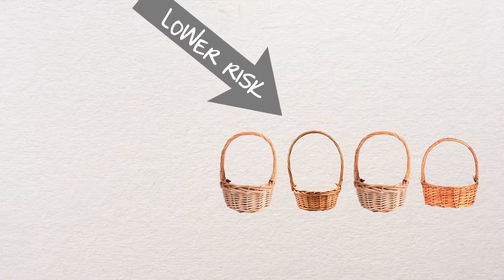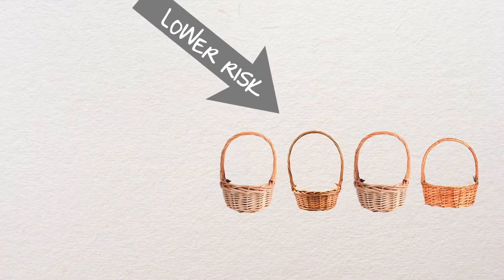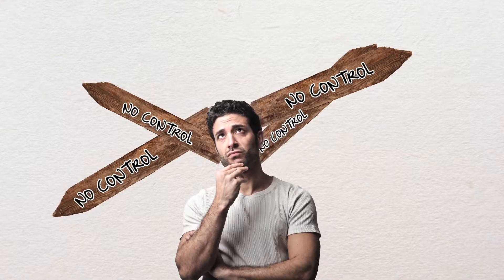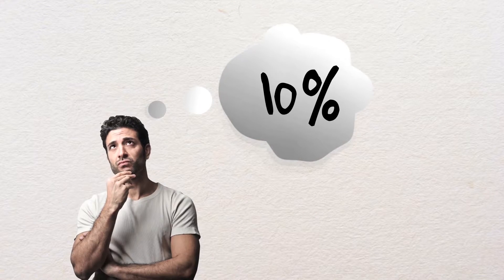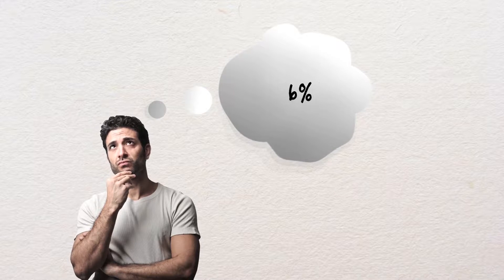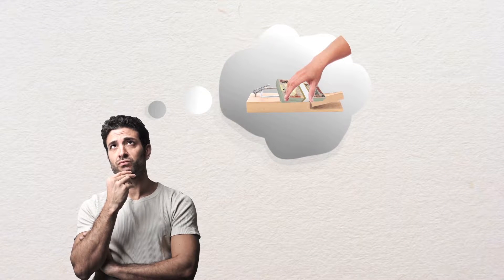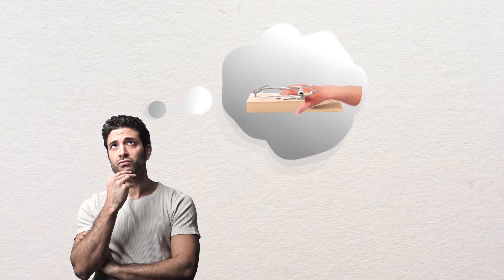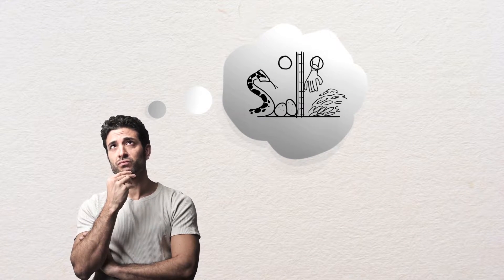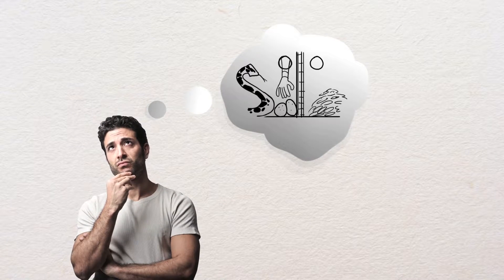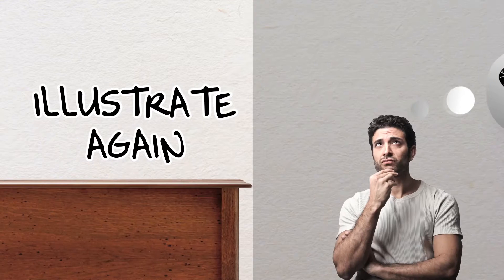Risk is easy to understand — it's the possibility of there being multiple outcomes, often those that we have no control over. There are many ways to measure risk, not just in terms of returns. Lack of liquidity is one kind of risk, as is the risk of a borrower or issuer defaulting. An investor can even face an opportunity risk by losing out on better returns elsewhere.